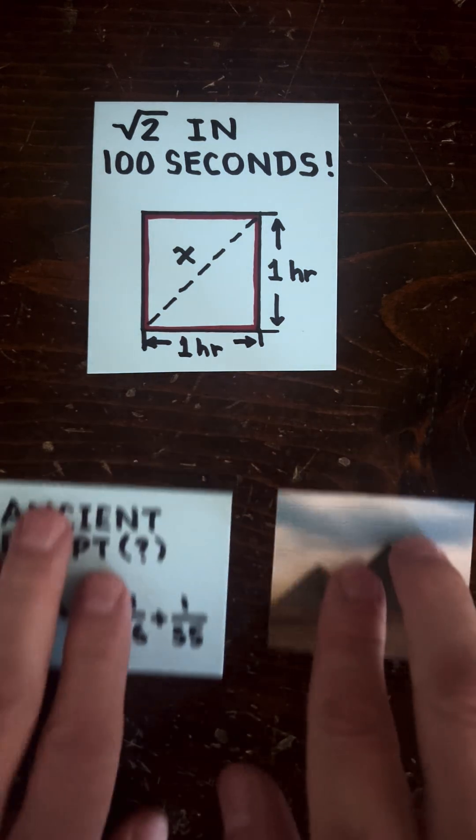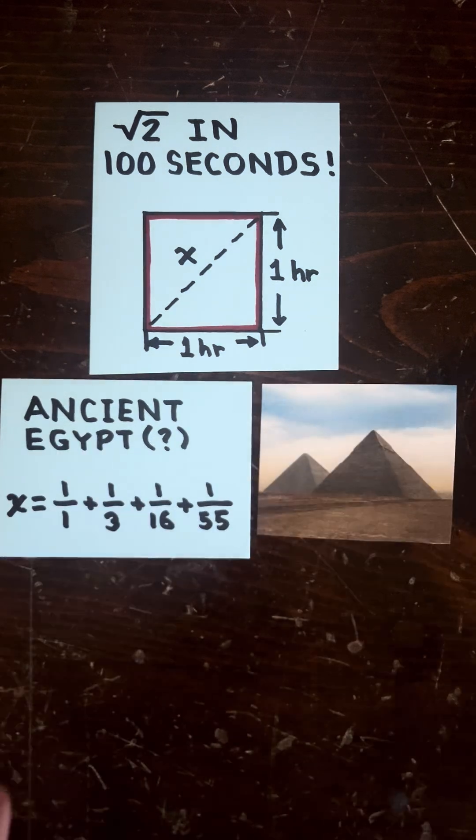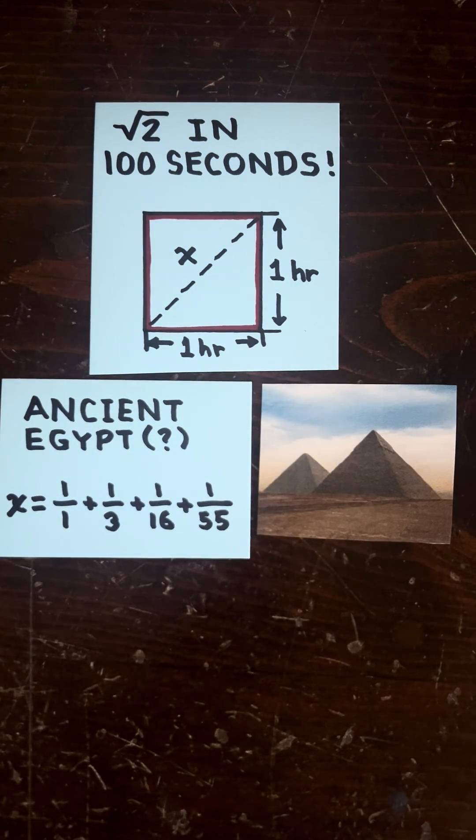And I don't think the ancient Egyptians were into this, but this is the way they did fractions. And if they had done this, this would be a super close estimate to what X really is.